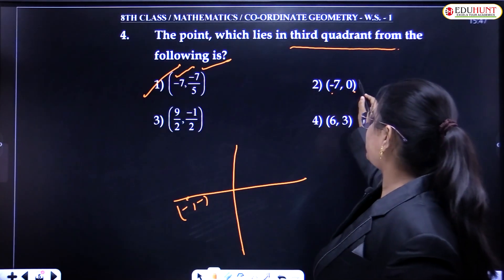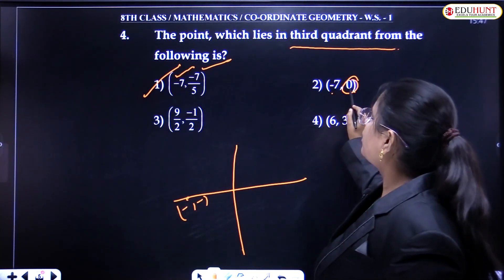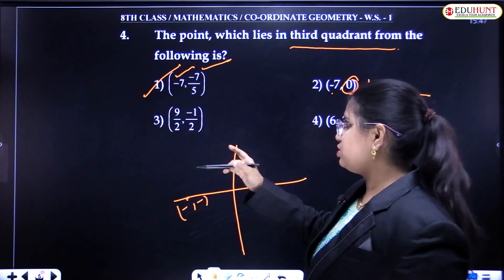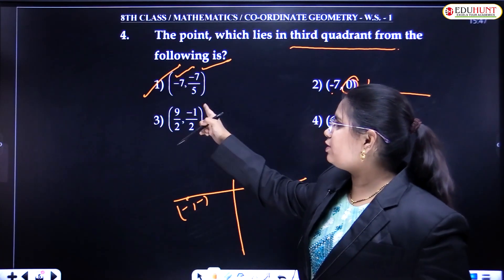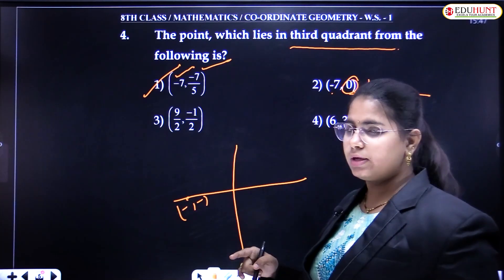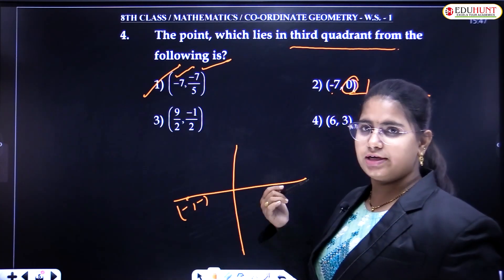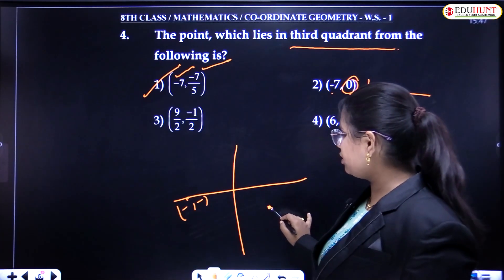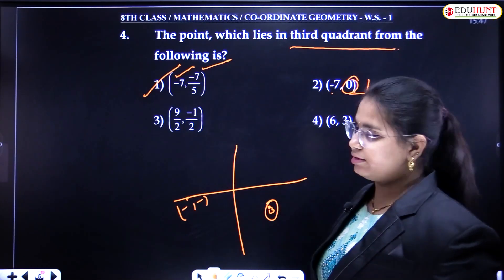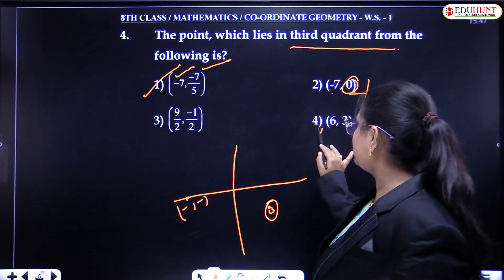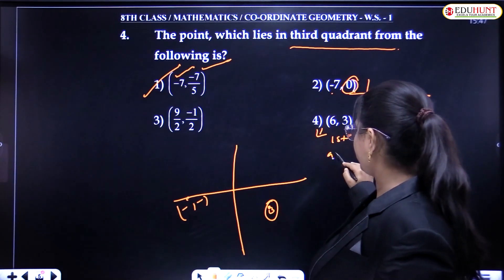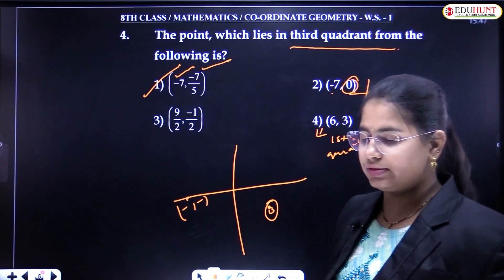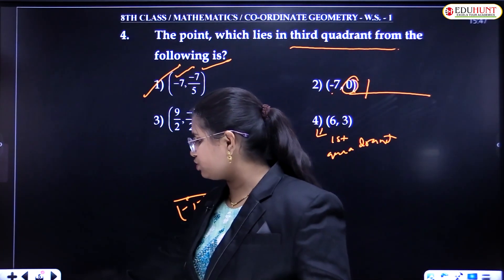Checking option 2, (-7, 0): Y is 0, so this point lies on the X axis, not in any quadrant. Checking option 3, (9/2, -1/2): X is positive and Y is negative, so this lies in the fourth quadrant. Checking option 4, (6, 3): both positive, so this lies in the first quadrant. Therefore, option A is the answer for the third quadrant.